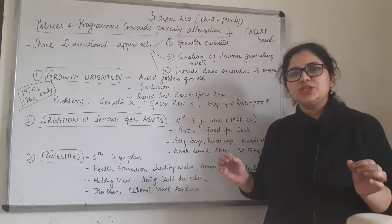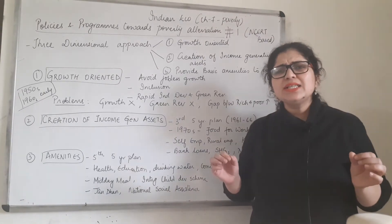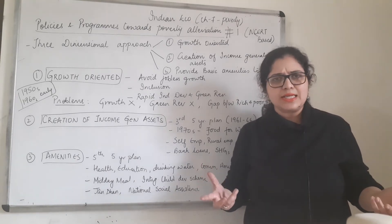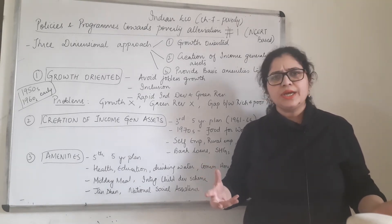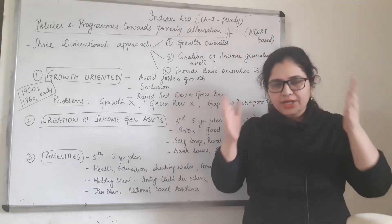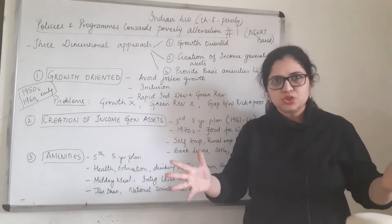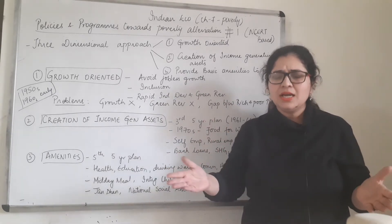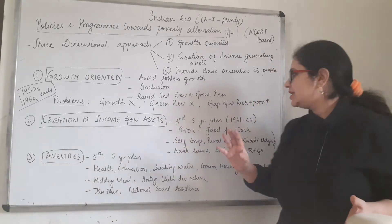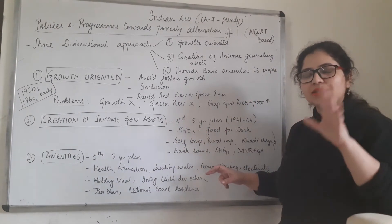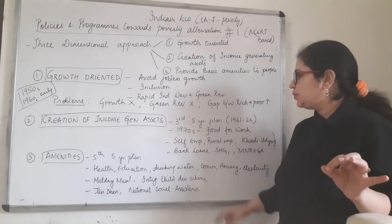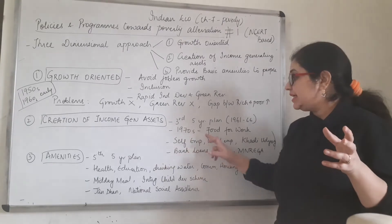Second point: creation of income-generating assets. You cannot give everything to people on a platter — for some things we have to work ourselves and earn our own money. We cannot say the government will look after us; in a country like ours with huge population and limited resources, we need to work for ourselves. But the government created income-generating assets. The third five-year plan from 1961 to 1966 started this, and in the 1970s a program called Food for Work was launched.